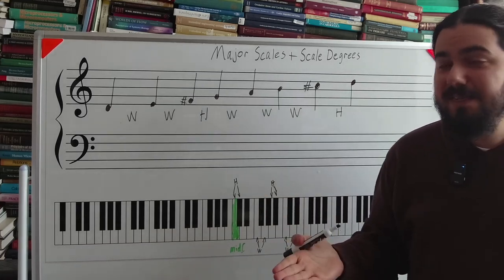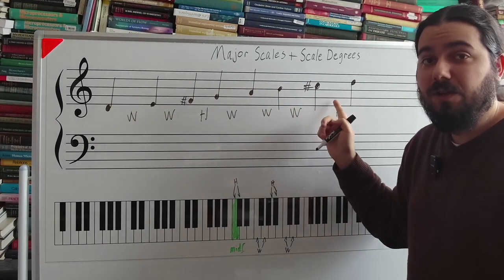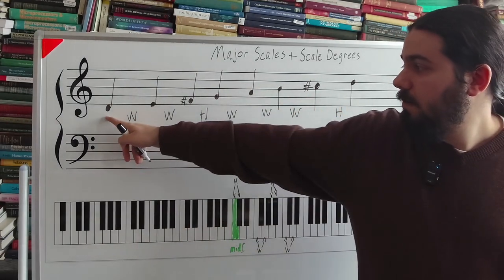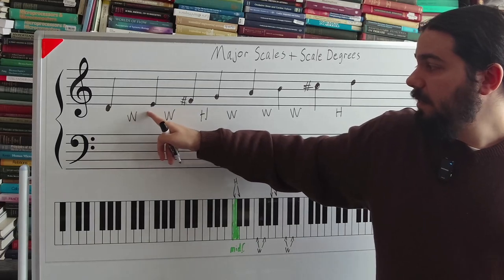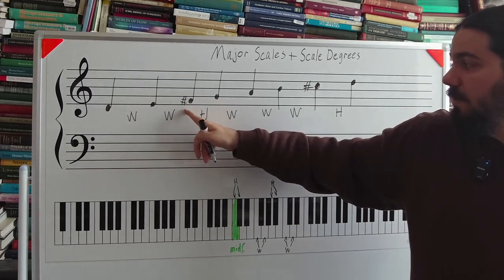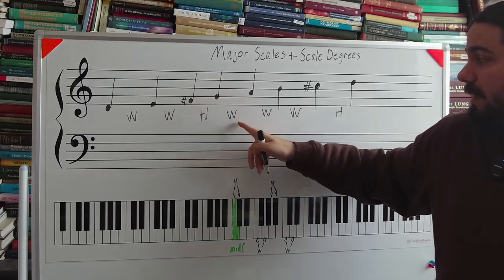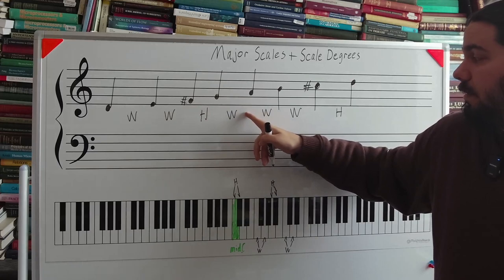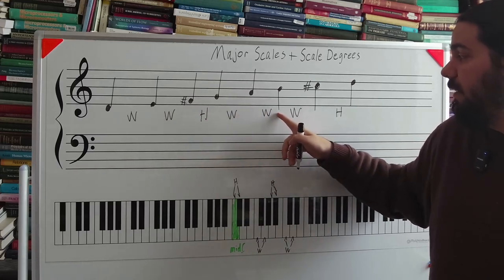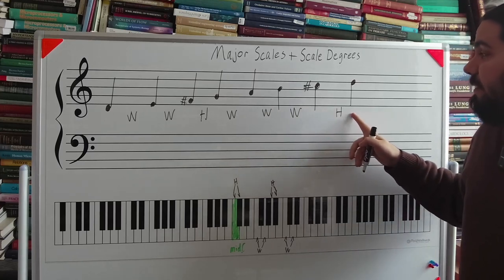So just like with C, I'm going to sound out the pattern and I'm going to play the notes on the piano. Starting from D, whole step up is E. Whole step up is F sharp. Half step up is G. Whole step up is A. Whole step up is B. Another whole step up is C sharp. And then a half step up is D.